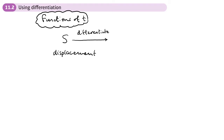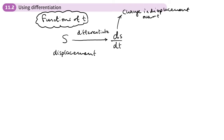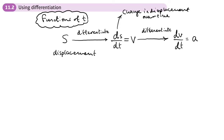...you will get ds/dt. This means the change in displacement over time, and that is the velocity. If you take your velocity and differentiate again, you get the acceleration — the change in velocity over time. These are the definitions we've done before for velocity and acceleration.